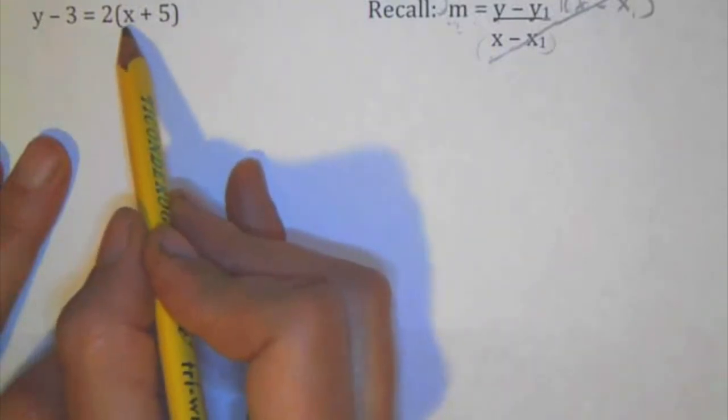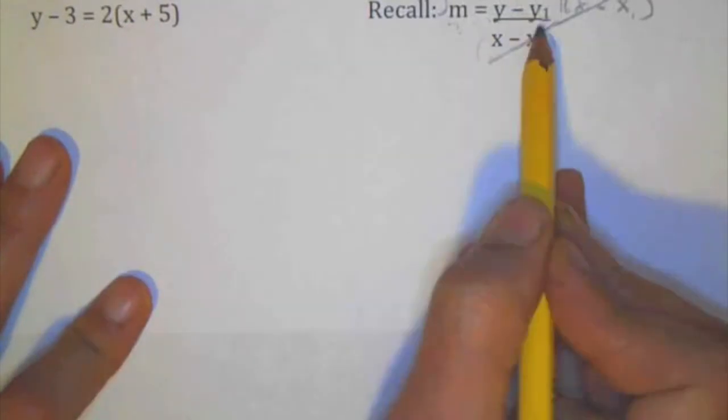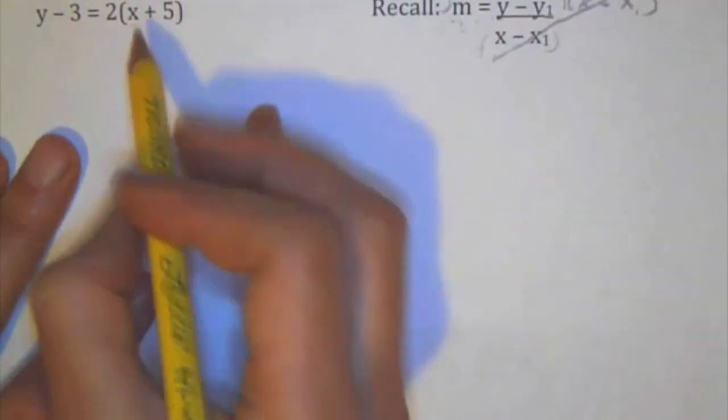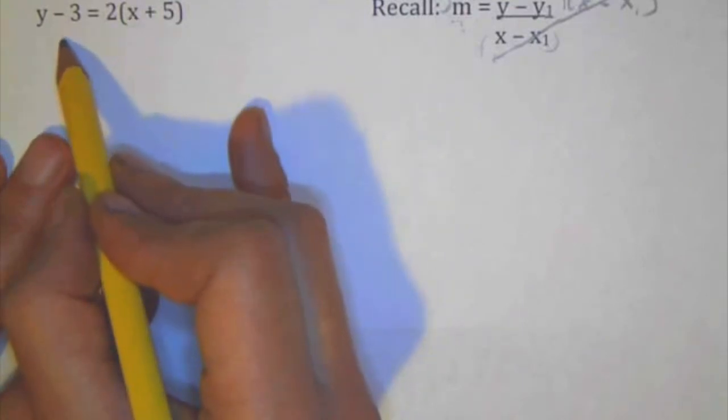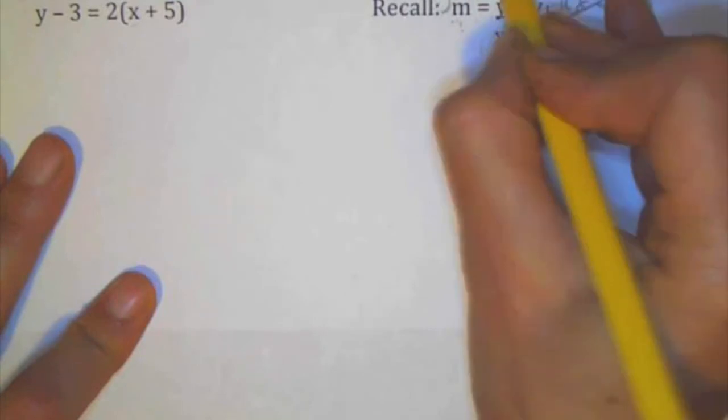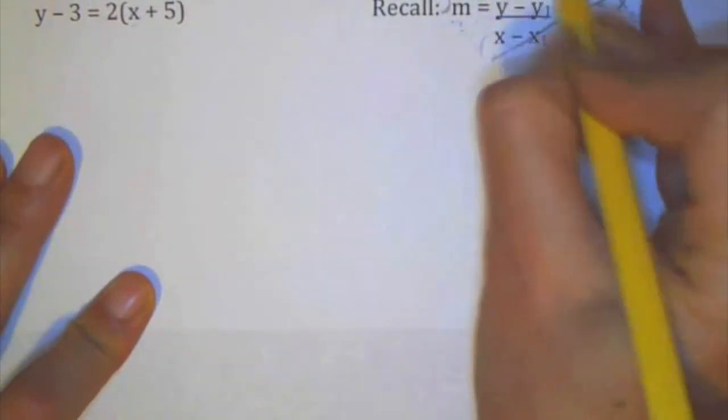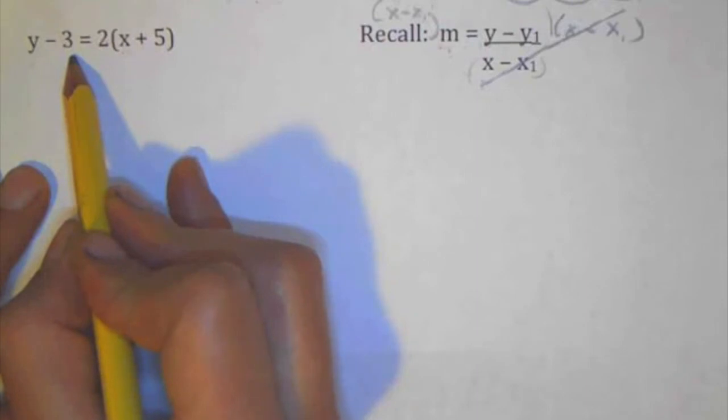So that's kind of the same thing, but instead of numbers in here that we would have plugged in to find the slope, we just left the x and y variables in there. So I look at this and I'm trying to get to slope-intercept form. And I can see that I've got the y almost by itself. I just need to get rid of this minus 3. But before I do that, I look at this other side and I've got parentheses, so I should really try to get rid of those first.